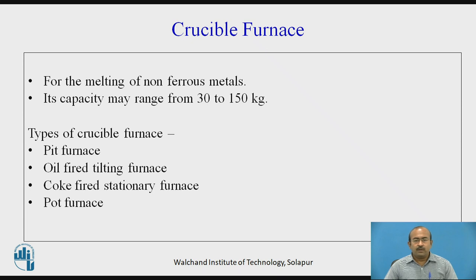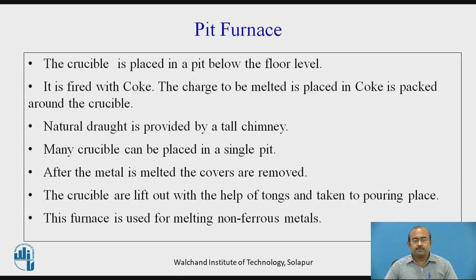For melting non-ferrous metals, the capacity of a crucible furnace may range from 30 to 150 kilograms. Further classification includes: pit furnace, oil-fired tilting furnace, coke-fired stationary furnace, and pot furnace. In the pit furnace, the crucible is placed in a pit below the floor level. It is fired with coke, which is packed around the crucible. Natural draft is provided by a tall chimney. Many crucibles can be placed in a single pit. After the metal is melted, covers are removed and the crucibles are lifted out with tongs and taken to the pouring place. This furnace is used for melting non-ferrous metals.